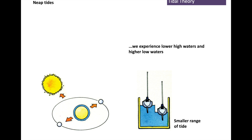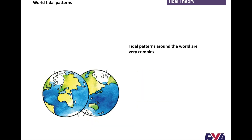On a neap tide, because it's a smaller range, there'll be less flow. On a spring tide, because it's a greater range, there'll be more flow. That's quite simplistic. If we take the earth we can see there's land in the way and it really depends on the geography of the land and the seabed as to how much tidal range we'll have.